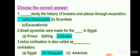Let's learn the book pack exercise. First question: who studies the history of humans and places through excavation? Answer: Archaeologists. Second question: small Pyramids were made for the queens in Egypt. Third question: the Indus civilization is also called Harappan civilization.